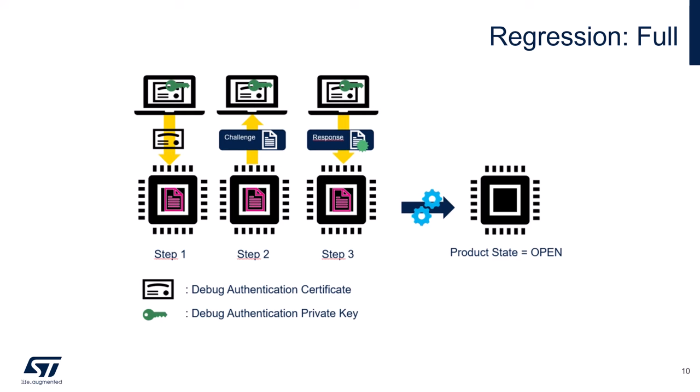In full regression, debug authentication erases the whole of the user flash memory, SRAM, and OB keys. Full regression also erases the debug authentication provision data, which is the certificate and authorized actions. Hence, the user must provision debug authentication data once again. After full regression, the STM32 device is in the open product state. Also, the STM32 DHUK is changed, and secure storage sections protected by the DHUK extracted before regression cannot be reused after regression.